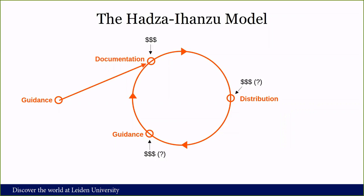It should be pointed out that in order for this feedback loop to continue, financial support might be required for certain steps. During the documentation stage, all of our local researchers are paid because they're taking the time and effort to do the documentation — time they would otherwise be spending contributing to their livelihood. The same might go for distribution or provision, depending on the method employed. And if you are establishing an advisory committee, you might also want to compensate members for the time they are using to provide that guidance.